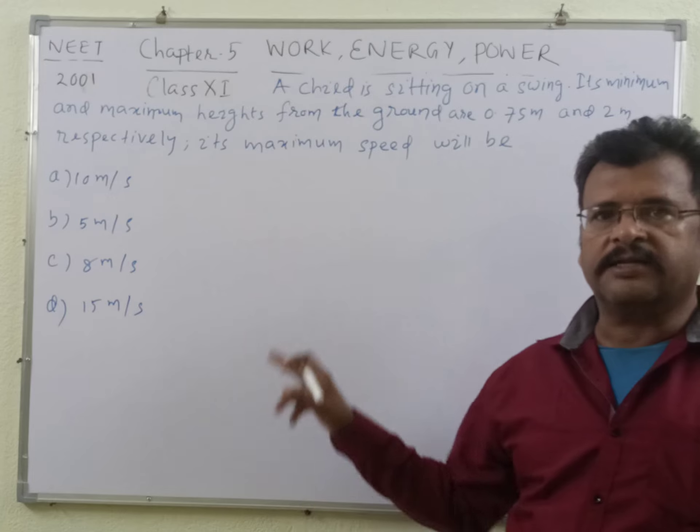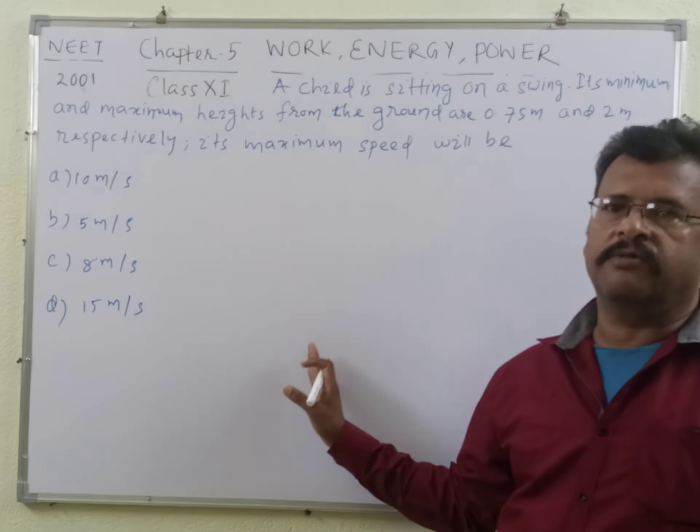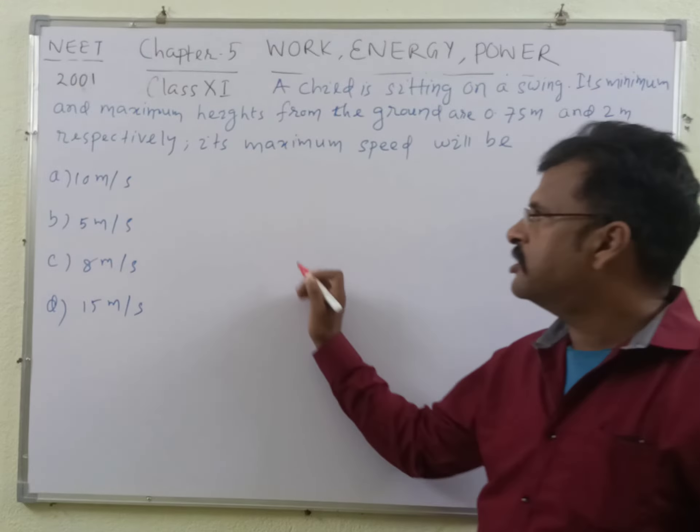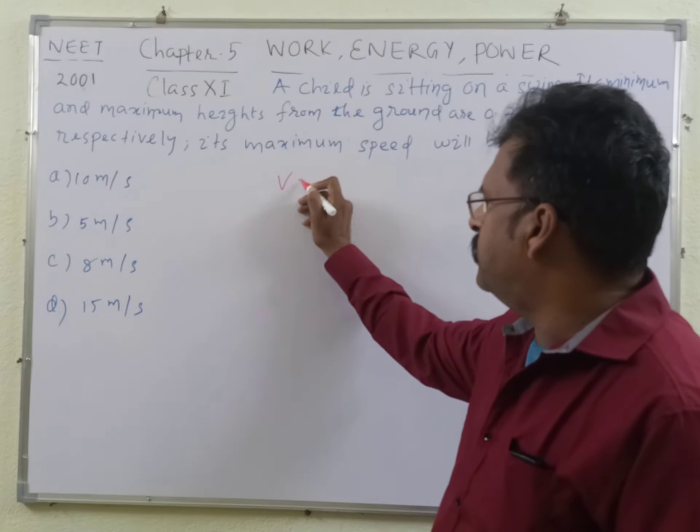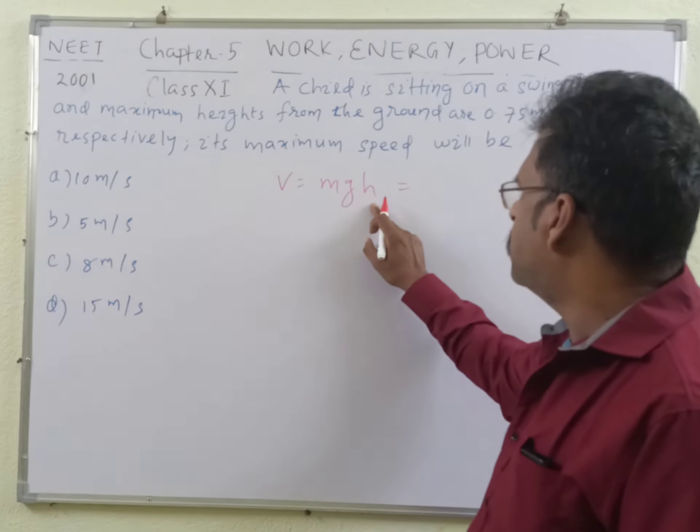Student, so the maximum value of the kinetic energy will be equal to the potential energy of the swing. And what is the formula for potential energy? We know V is equal to mgh. And what is the height here, student?